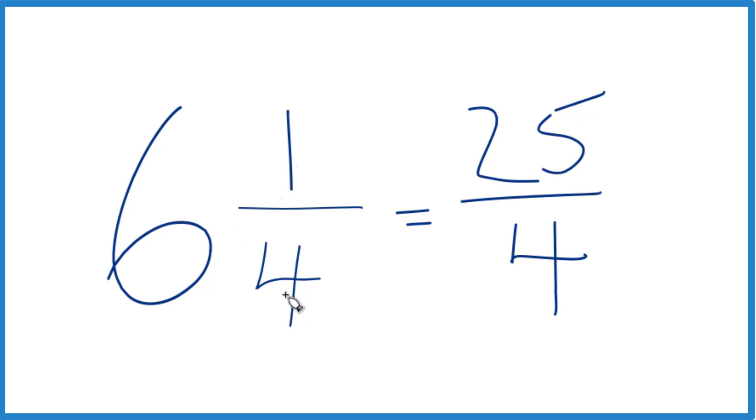6 times 4 is 24. 24 plus 1 equals 25. Bring the 4 across.